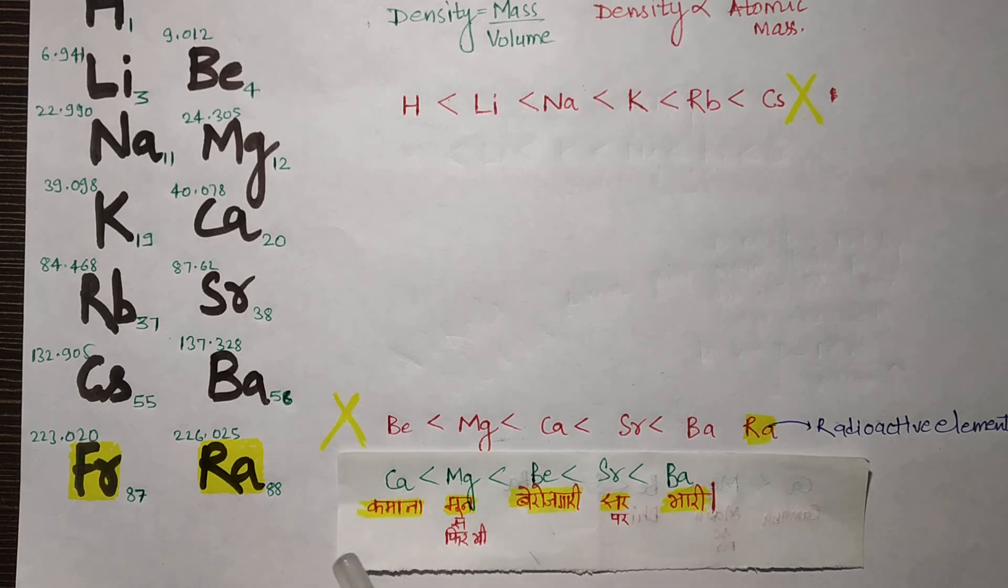So 'Kamana man se, phir bhi biroz gari sar pe bhari' - this is the density order for alkaline earth metals in increasing order, located within this trick.